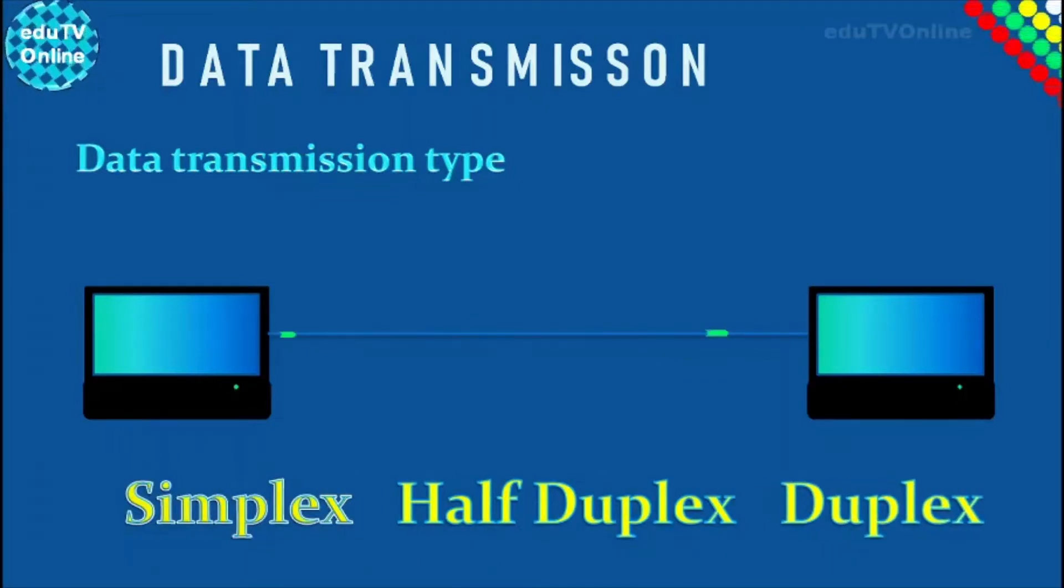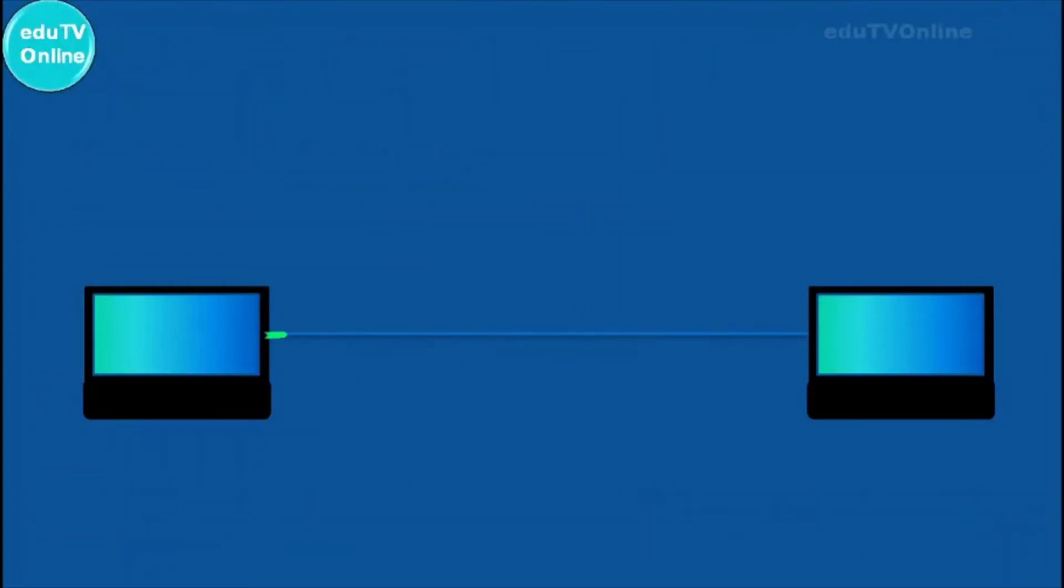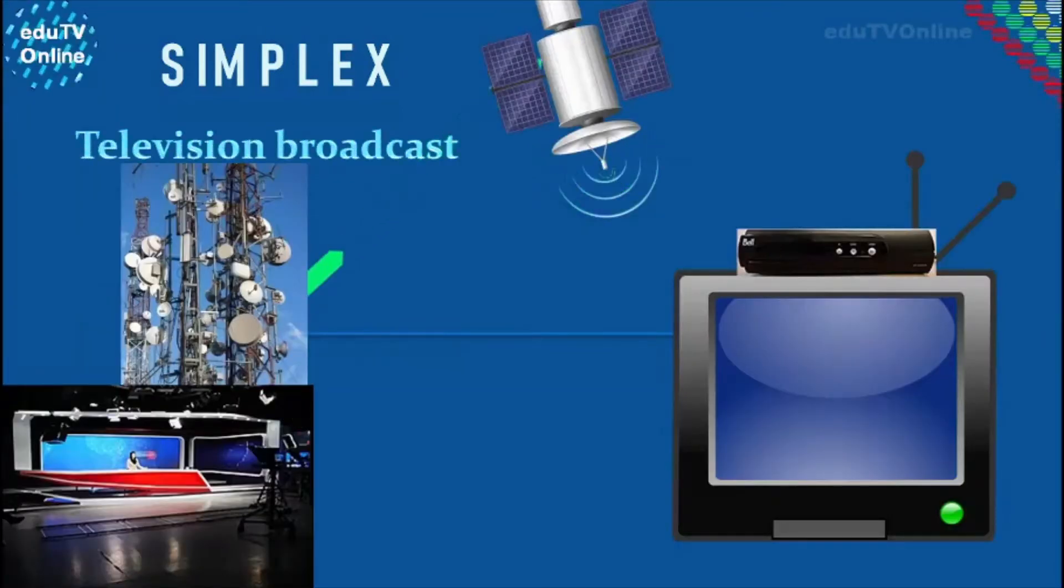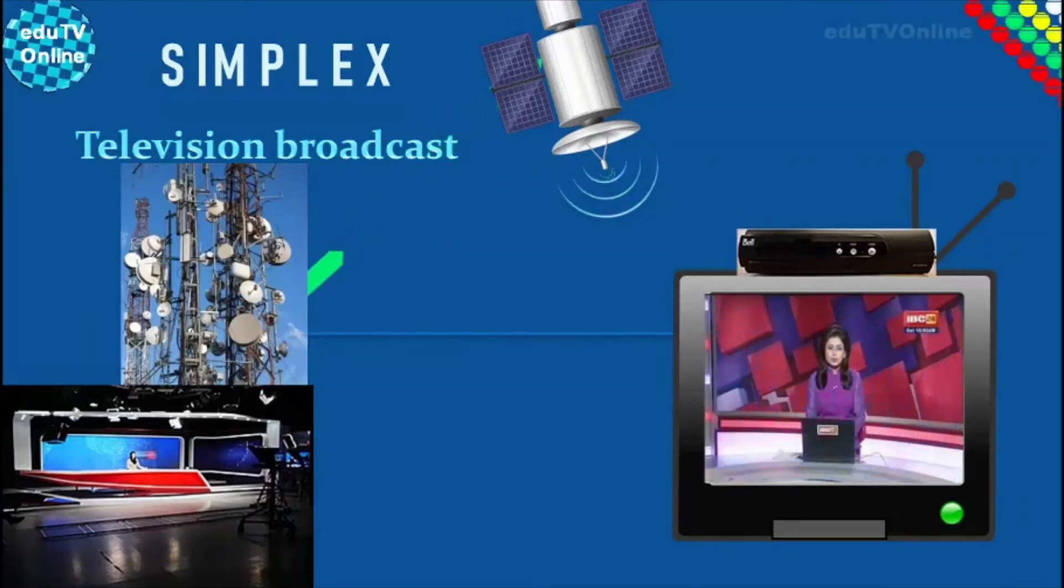First we can talk about simplex. In simplex transmissions, data is sent in one direction only. Think of it as a one-way street where traffic can only drive in one direction down it. An example is a television broadcast where data is transmitted to receiving televisions.